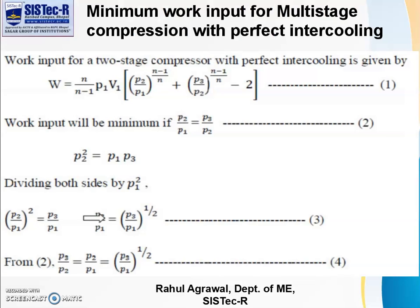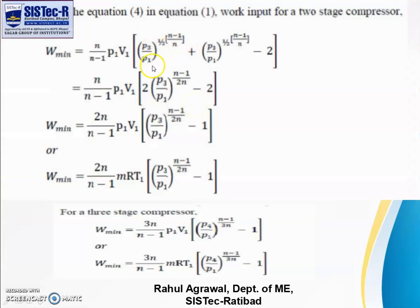Substituting this into our equation with P2/P1 and P3/P2 equal, we get (P3/P1)^(n-1)/n + (P3/P1)^(n-1)/n, with both powers equal to (n-1)/(2n). Taking 2 common, we get W_min = (2n)/(n-1) P1V1 [(P3/P1)^(n-1)/(2n) - 1]. This is the minimum work for two-stage compression.